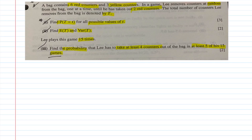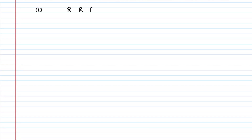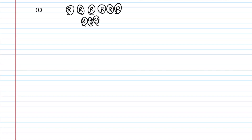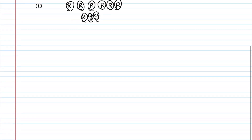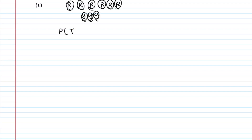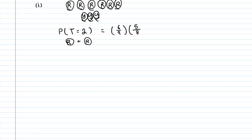Part one is straightforward — find the probability for the number of counters taken until he has two red counters. We have six red and three yellow counters. The first case is T=2: he gets both red counters immediately. That's 6/9 times 5/8, since after taking one red counter, there are five red left out of eight total, giving 5/12.